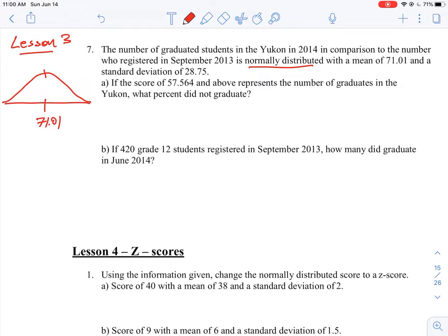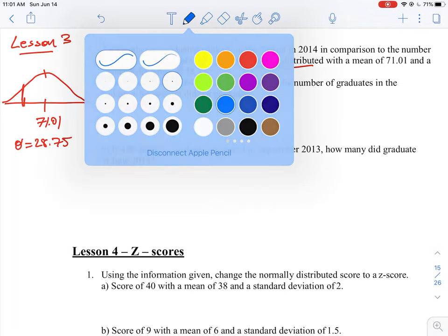We have a standard deviation of 28.75. That's the deviation around the mean. If the score of 57.564 and above represents the number of graduates in the Yukon, what percent did not graduate? 57.564 is going to be somewhere below the mean here.